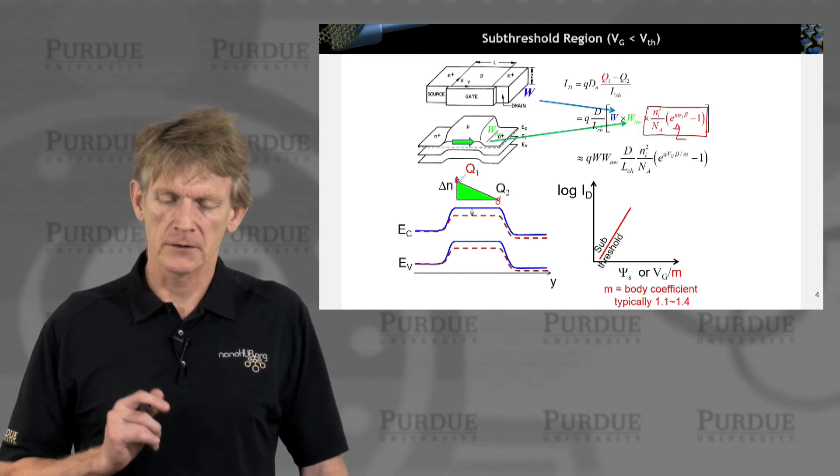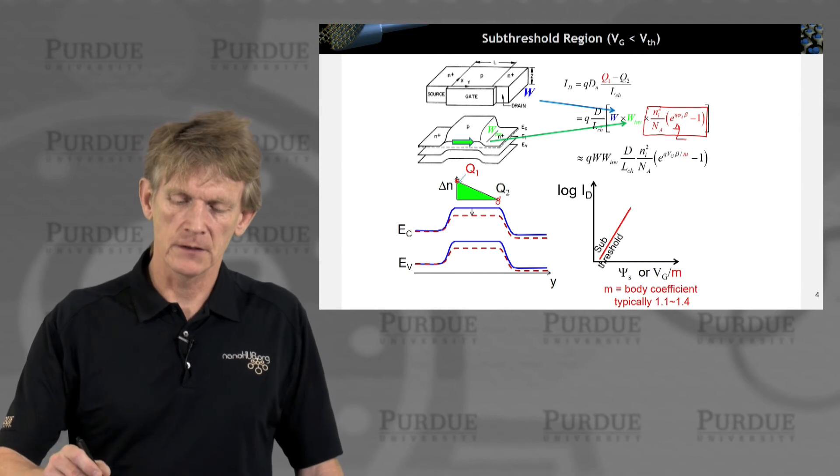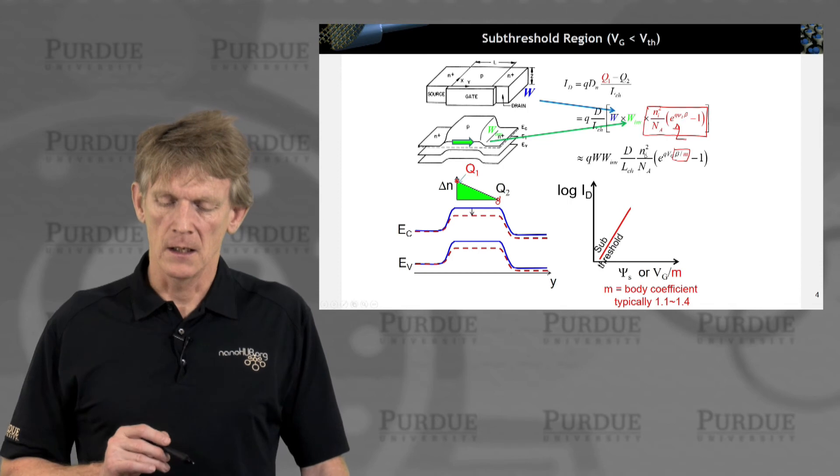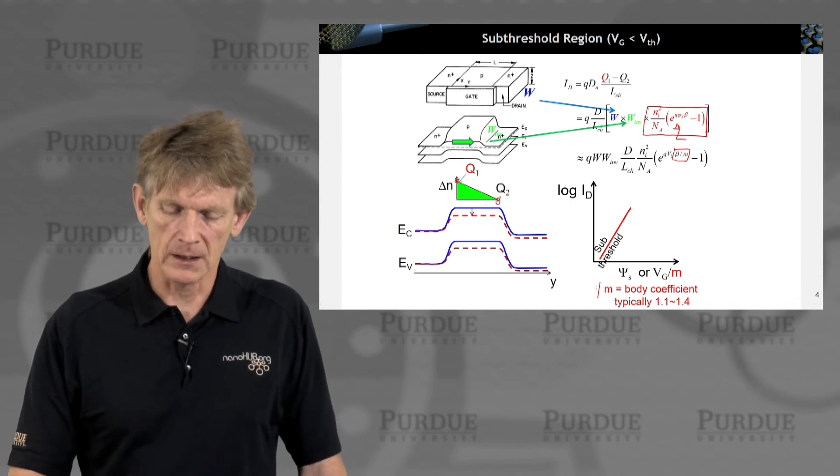And what are its characteristics? Well, it goes as kT with a beta in here. And it has some body coefficient, a modulation that we had discussed.